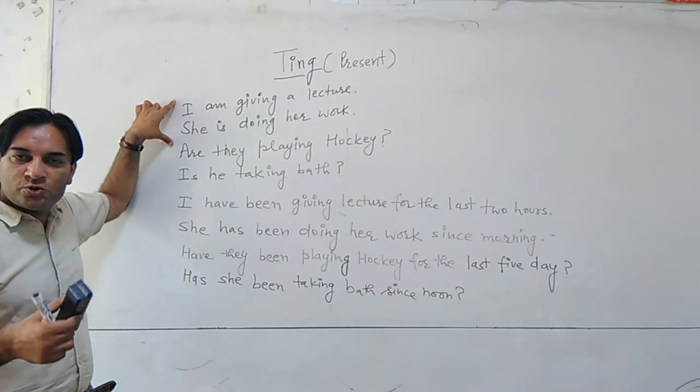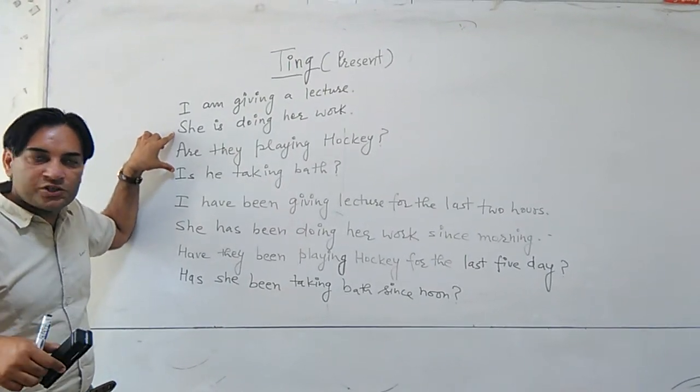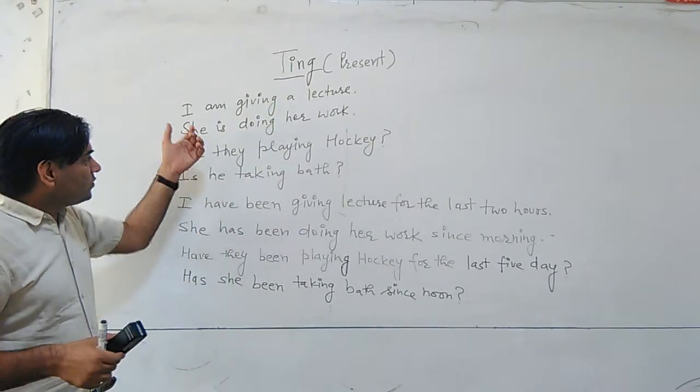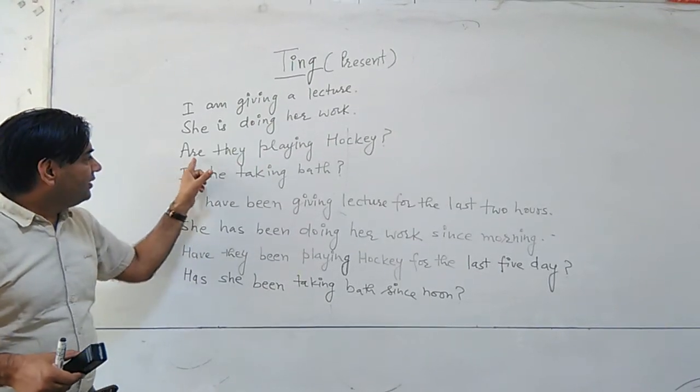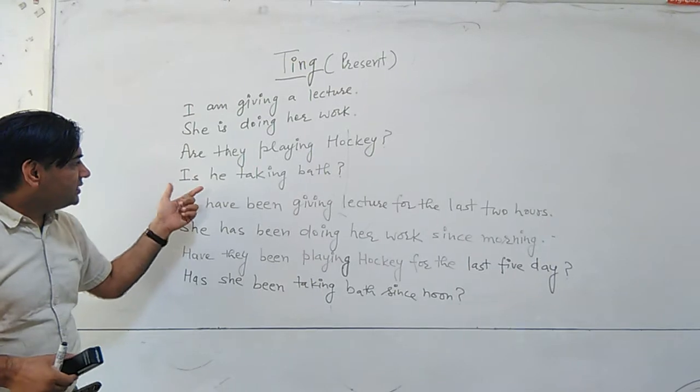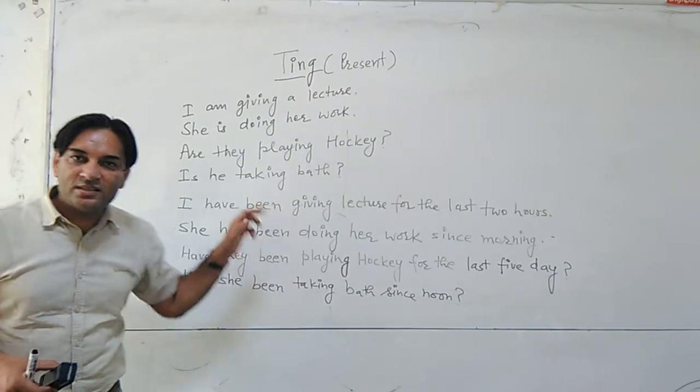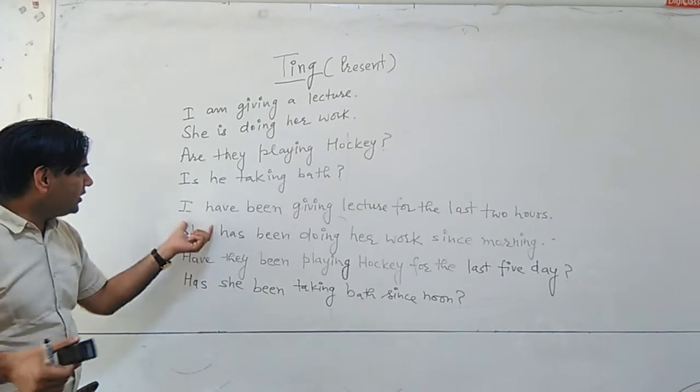This is the way to tell. And how to ask about an ING action. Only ING action. We use IS/ARE in the beginning. Like, are they playing hockey? Is she taking bath? We are going to ask about an action which is taking place, which is continuous.